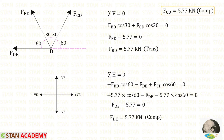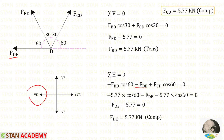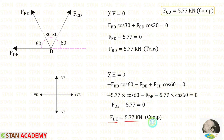Now let us apply the rule Sigma H = 0. To make FBD horizontal we need 60 degrees, so we multiply FBD with cos 60. When we make it horizontal it will be acting towards the left side, so it should be applied as negative. FDE is also acting towards the left side, so it is also negative. To make FCD horizontal we need 60 degrees, so we multiply FCD with cos 60. When we make it horizontal it will be acting towards the right side, so it should be applied as positive. We know the values of FBD (5.77) and FCD (compressive, applied as negative). Finally for FDE we will get a negative value, meaning it is compressive.